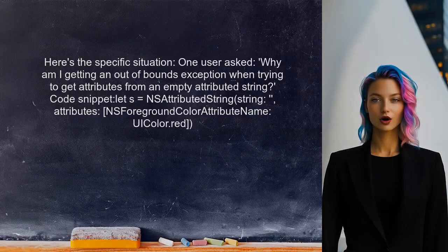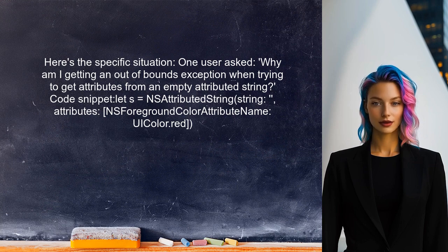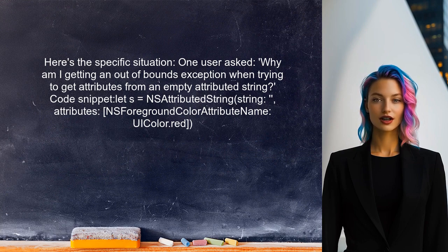Let's take a closer look at the specific situation here. One user recently asked: why am I getting an out-of-bounds exception when trying to get attributes from an empty AttributedString? They provided this code snippet: let s = NSAttributedString, with string, attributes NSForegroundColorAttributeName set to UIColor.red. This is a common scenario, so let's dig into it.